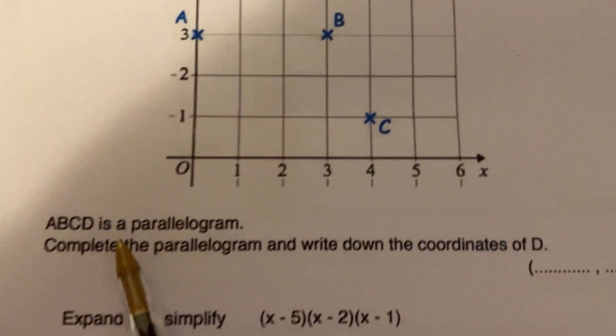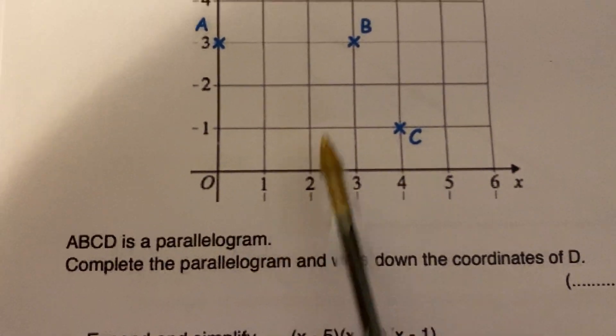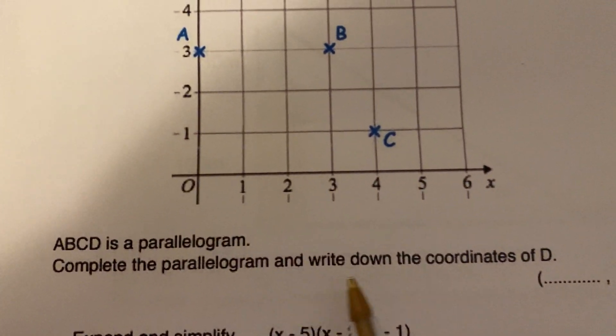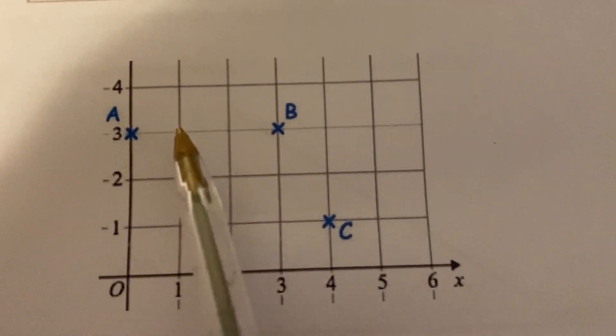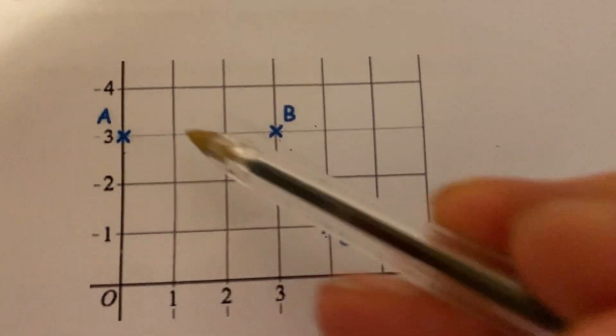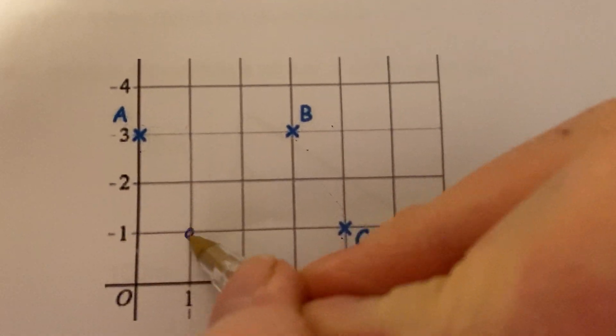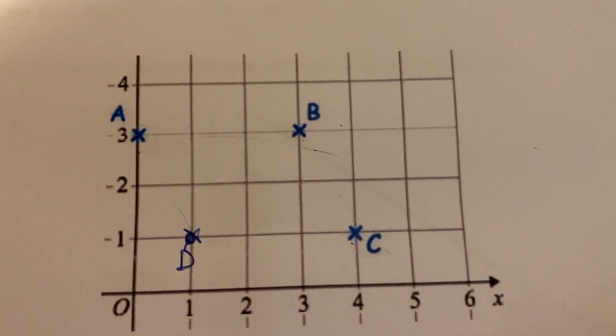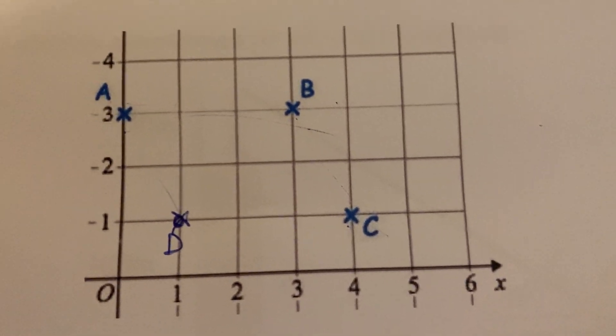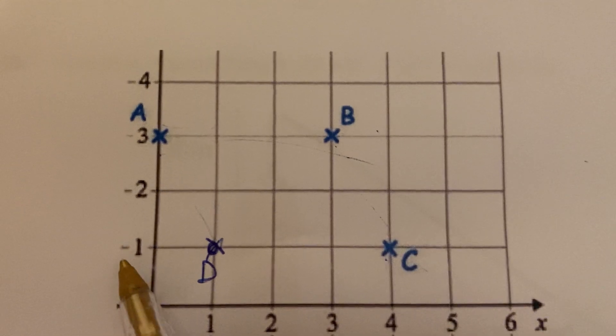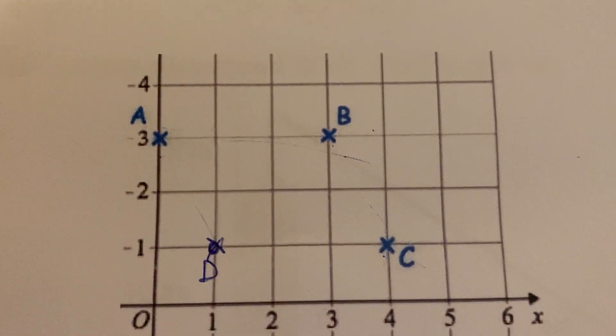Okay, so we're told that ABC is a parallelogram ABCD. Complete the parallelogram down to corner D. It has parallel sides, so you can clearly see if that goes two across, one down, two across, one down, D should be there. That corner point is at one, one. There you go.